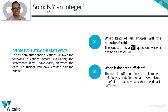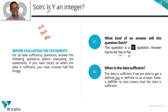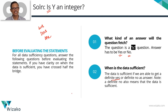This question is an 'is' question. Anything that starts with is, was, does, are — all these be-verb starting questions — the answer is going to be yes or no. The data is sufficient if you're able to come up with a definite yes, meaning y is an integer and can't be anything else. Conversely, if you can answer with a conclusive no — y can never be an integer — even then the data is sufficient. Answering with a definite no also means the data is sufficient.